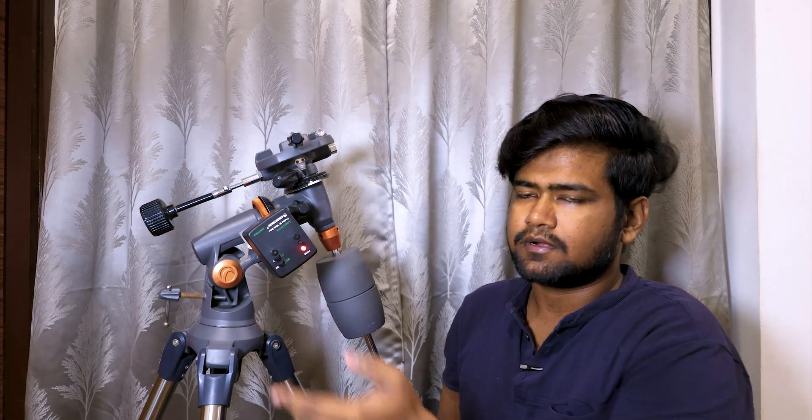So now our motor drive is perfectly installed to our equatorial mount, and now we are just ready to go. Turn on the switch and it will keep on tracking. Just point your telescope towards the object that you want to track, and in case if you are doing long exposure, use your camera device or mobile phone, whatever you want to attach with it, and then turn it on. It's as simple as that.